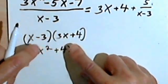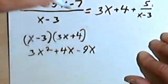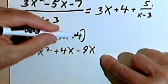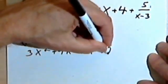Multiplying the inside terms, negative 3 times 3 gives me negative 9x. And multiplying the last terms, we have negative 3 times 4 is negative 12.